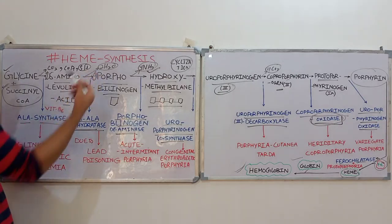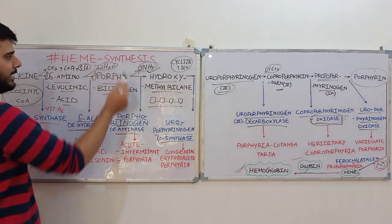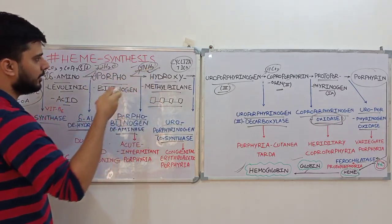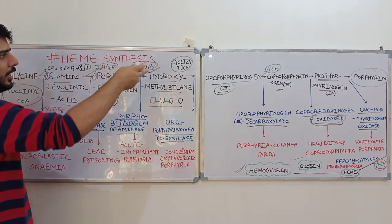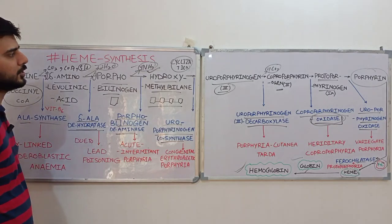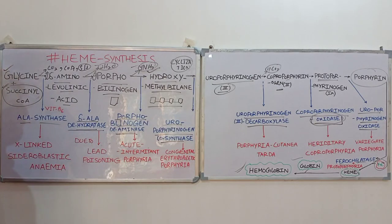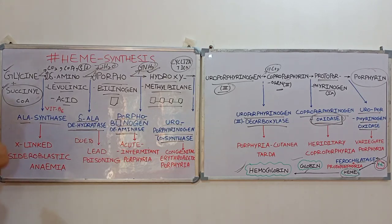Overall, that is the process of hemoglobin formation. You need to remember which step involves dehydration, which involves de-amination, and during which step cyclization takes place. But more important than the steps themselves are the diseases linked to each step.